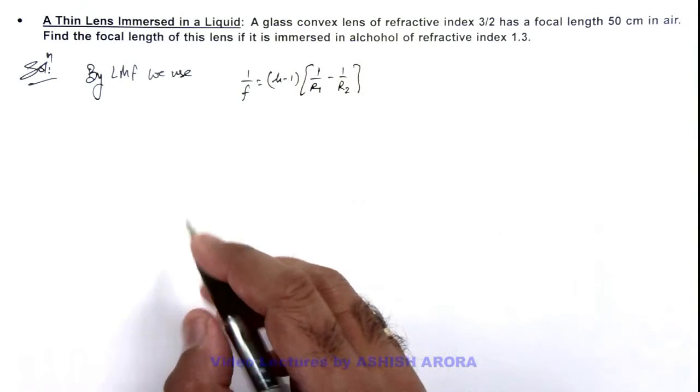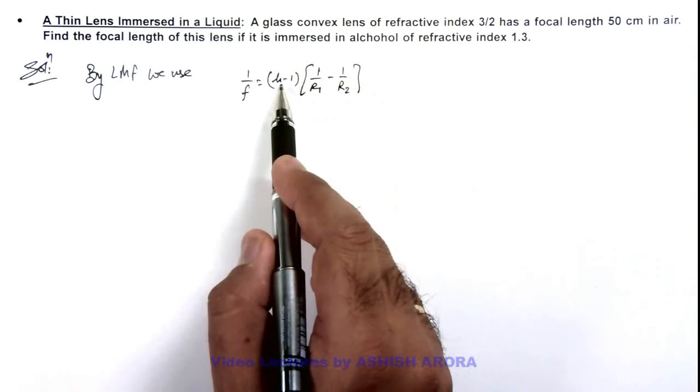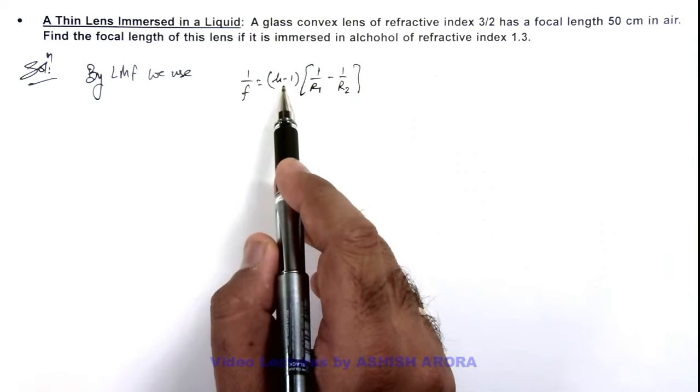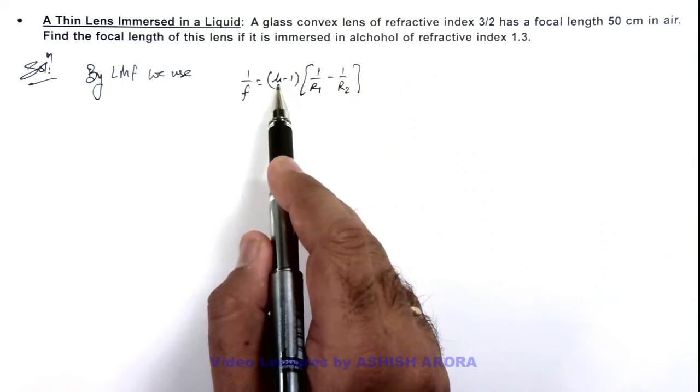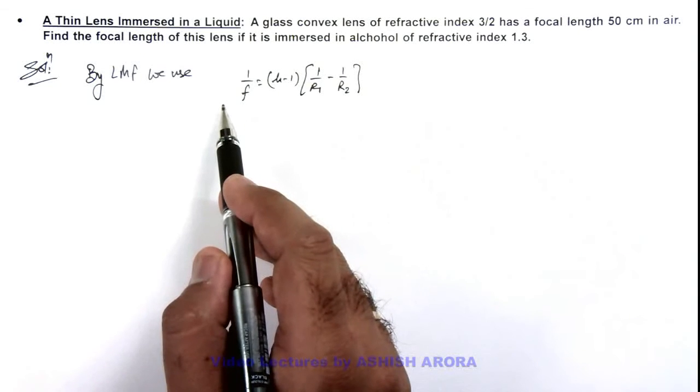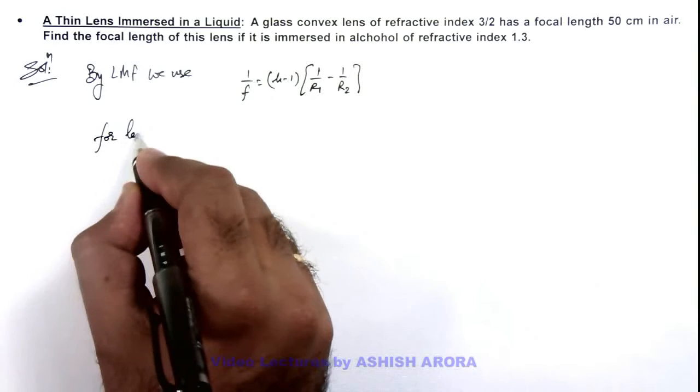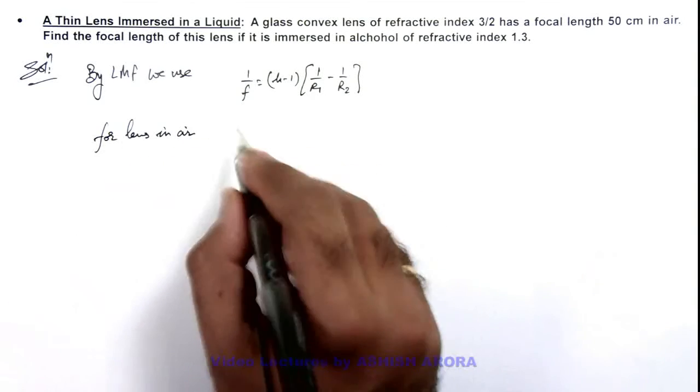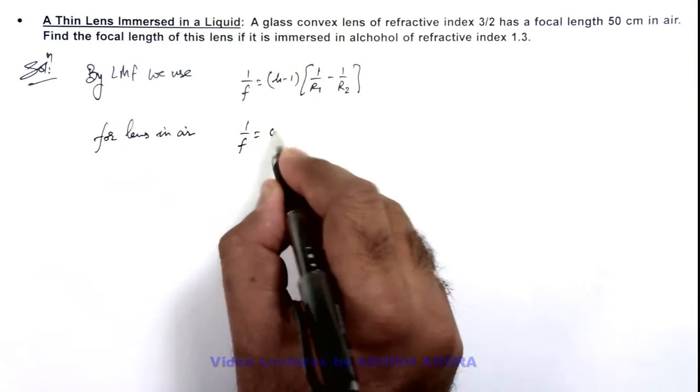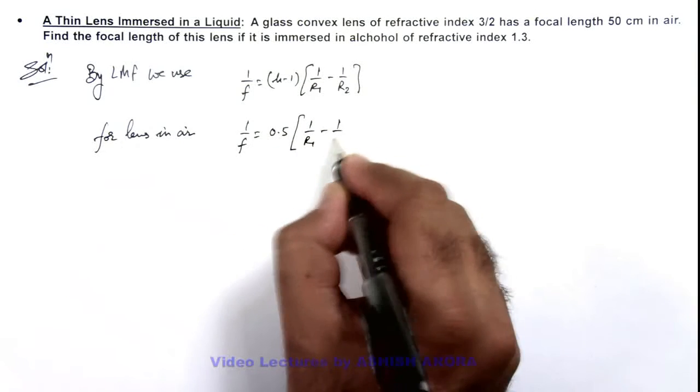We are given that when the glass convex lens is in air, its μ can be taken as 3/2. So in this situation, μ can be taken as 3/2, and the focal length is given as 50 centimeter. For lens in air, we use 1/f = 0.5(1/r₁ - 1/r₂).